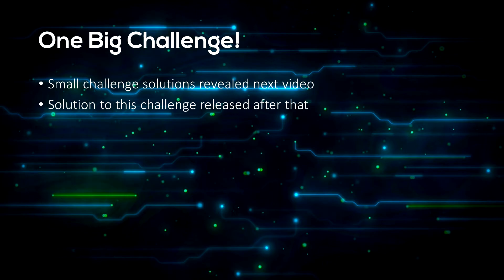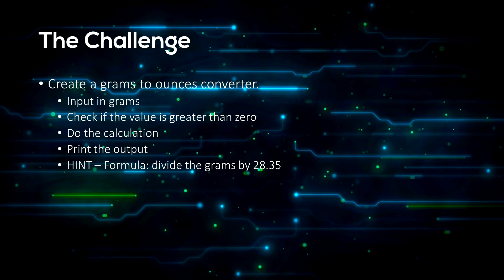That's the end of the summary. I'm going to set you one big challenge to see if you can do it. I'll be covering all the solutions to the challenges next video, and the video after that will be the solution to this big challenge. What I want you to do is create a grams to ounces converter. You will need to have an input in grams, check if the value is greater than zero — if it isn't, leave an error message; if it is, continue with the program — then print the output. The formula is to divide the amount of grams by 28.35, so one gram equals 0.035274 ounces.